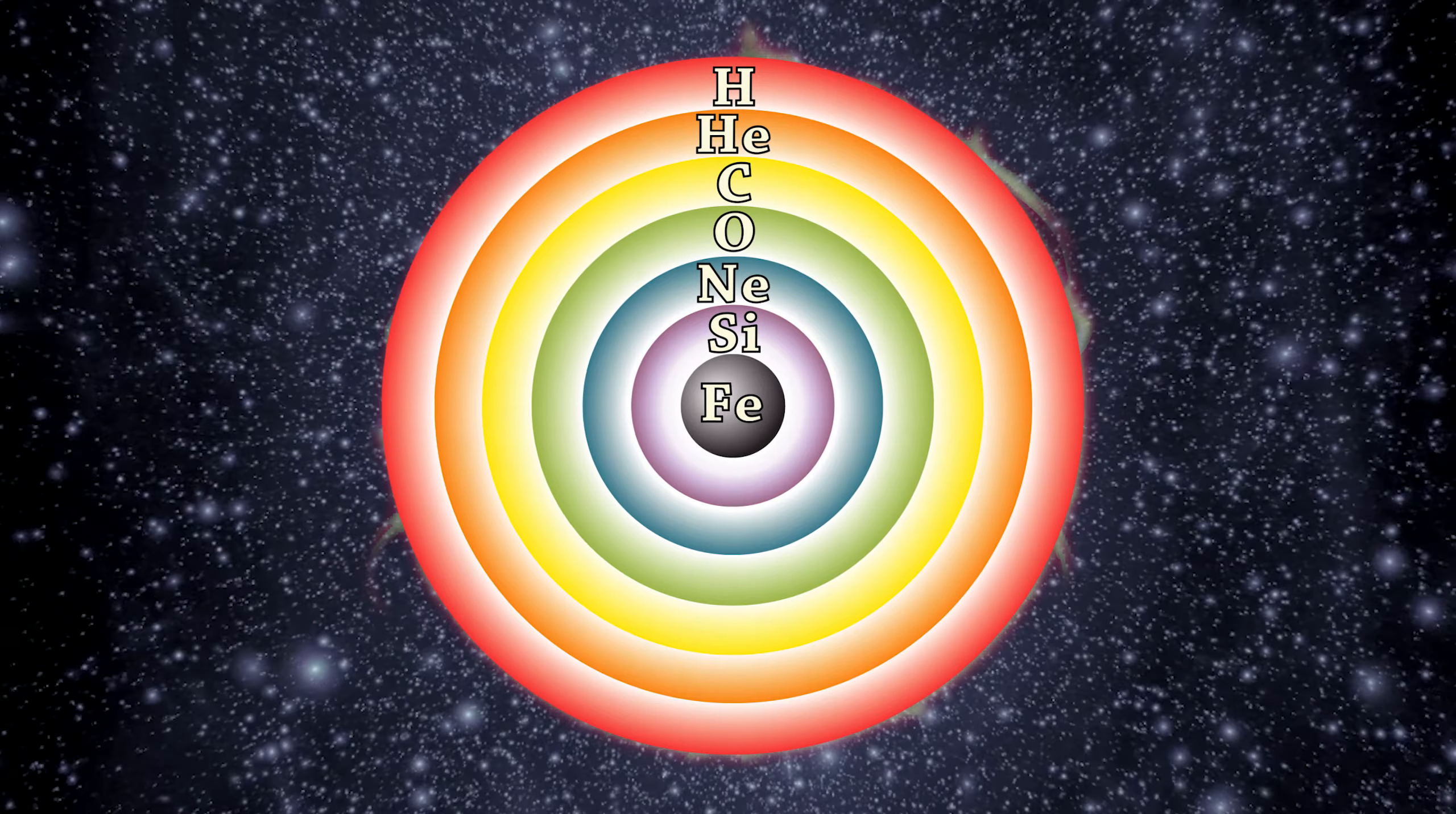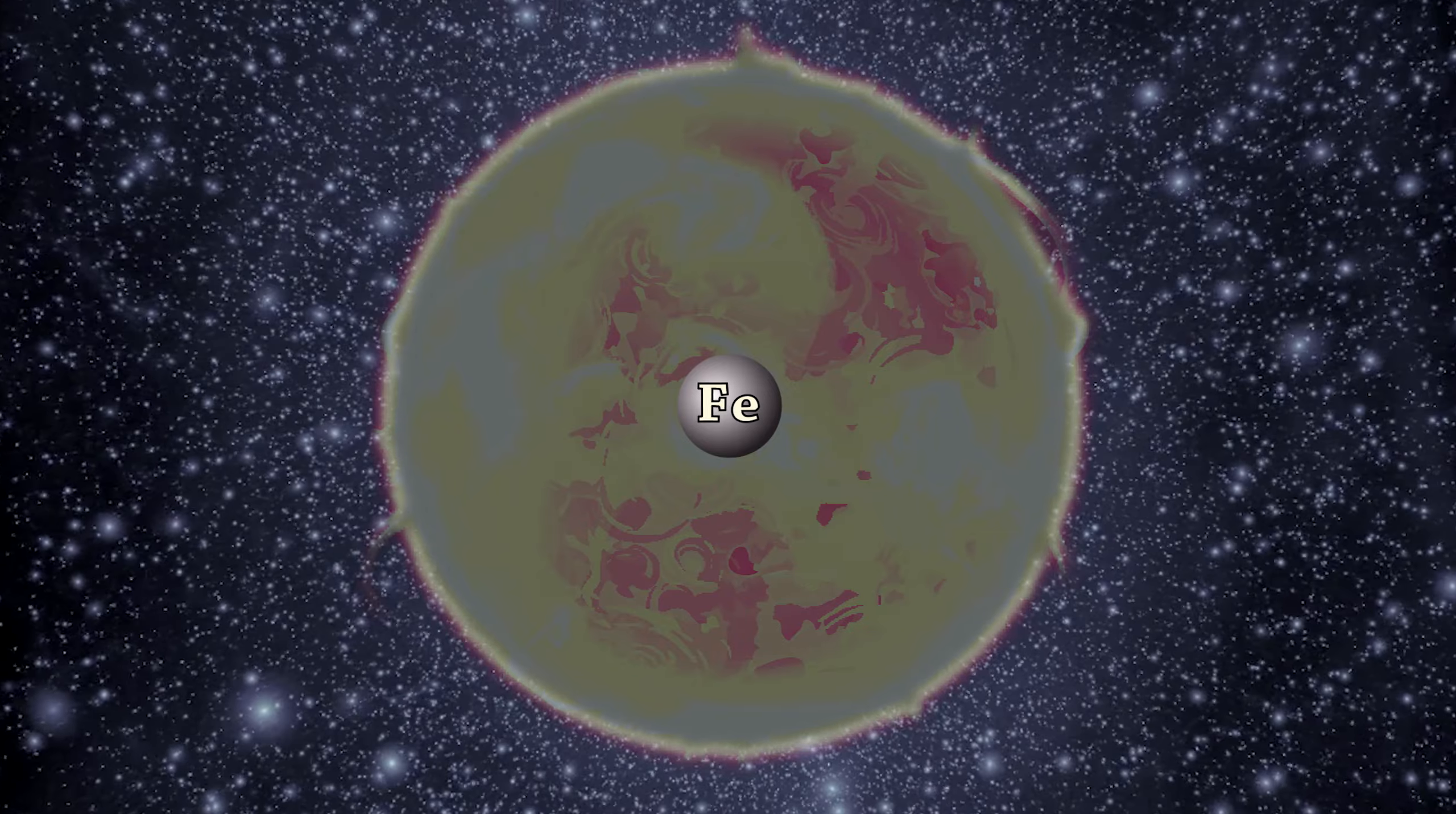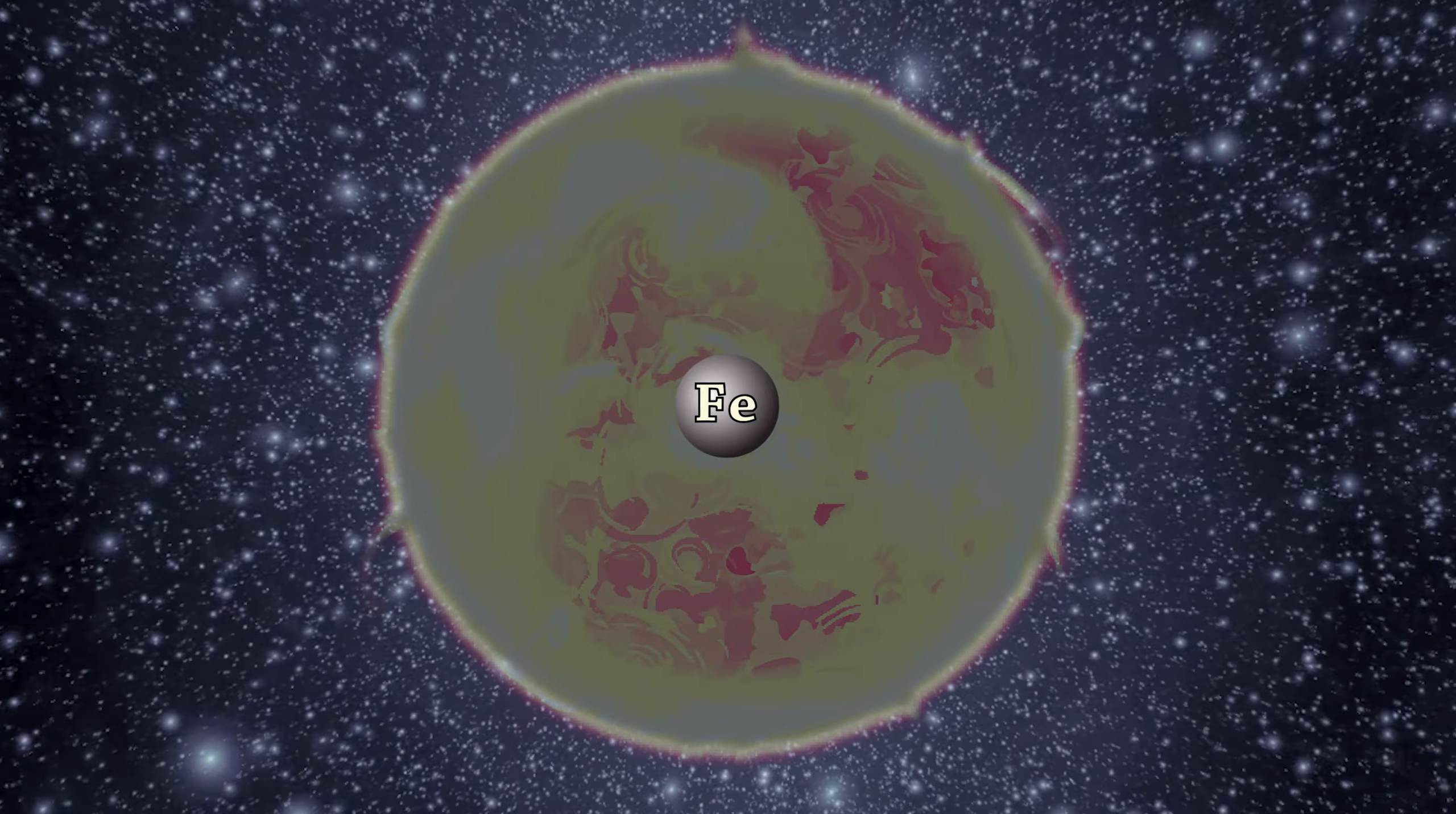The reason the process stops at iron is because you do not gain energy from fusing iron or heavier elements. At this point fusion would not add to the outward pressure stabilizing the star. As nothing is supporting the iron core against collapse under its own gravity, it starts to implode which is the opposite of explode.